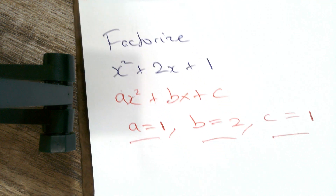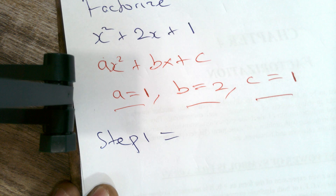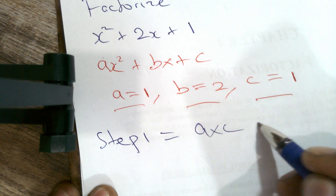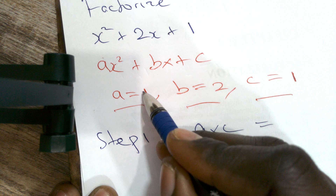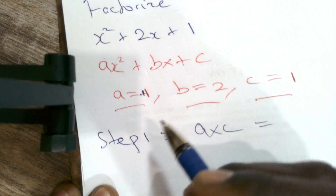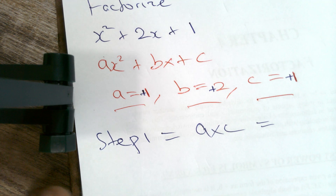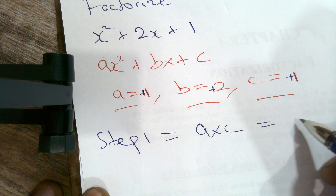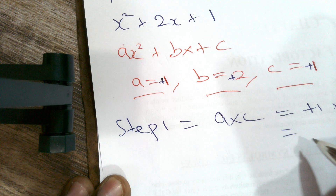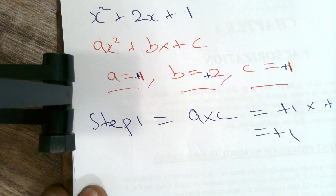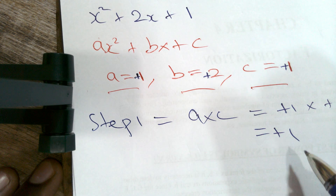Step one: multiply a by c. Adding the signs: a equals positive 1, b equals positive 2, c equals positive 1. So a times c equals positive 1 multiplied by positive 1, which gives us positive 1. That's step one completed.